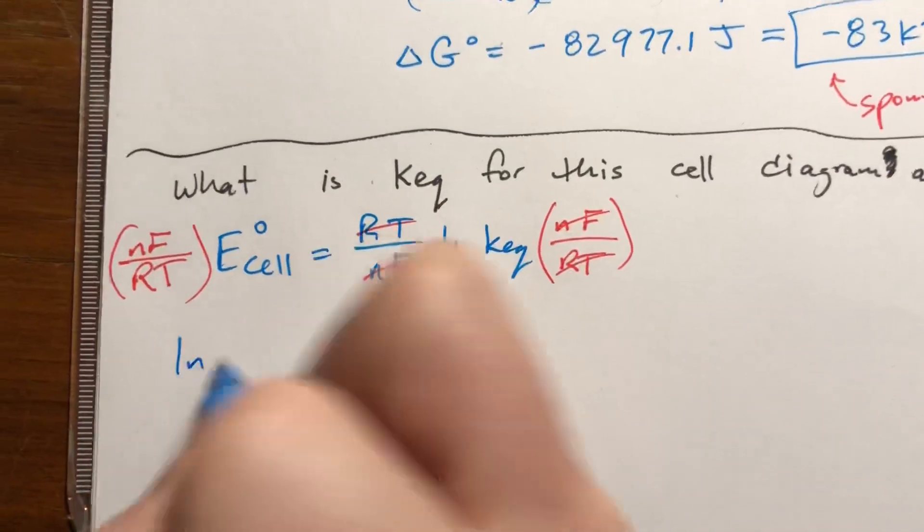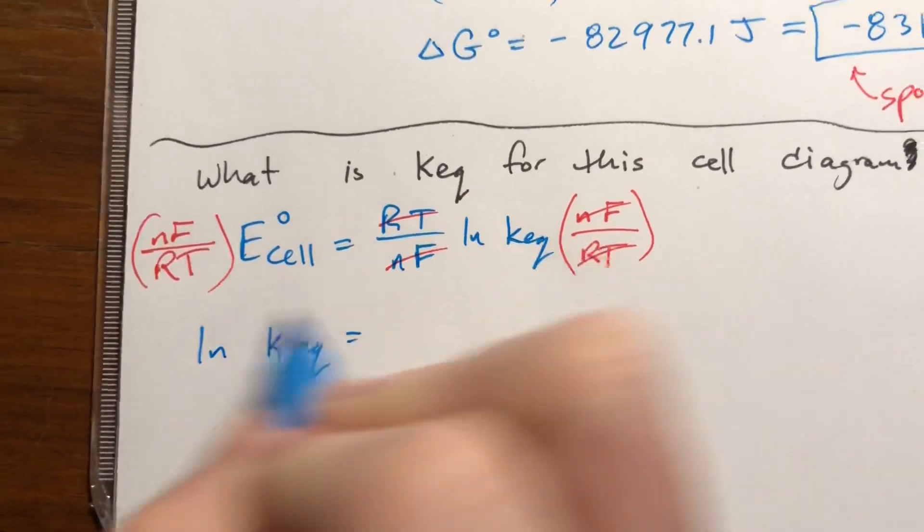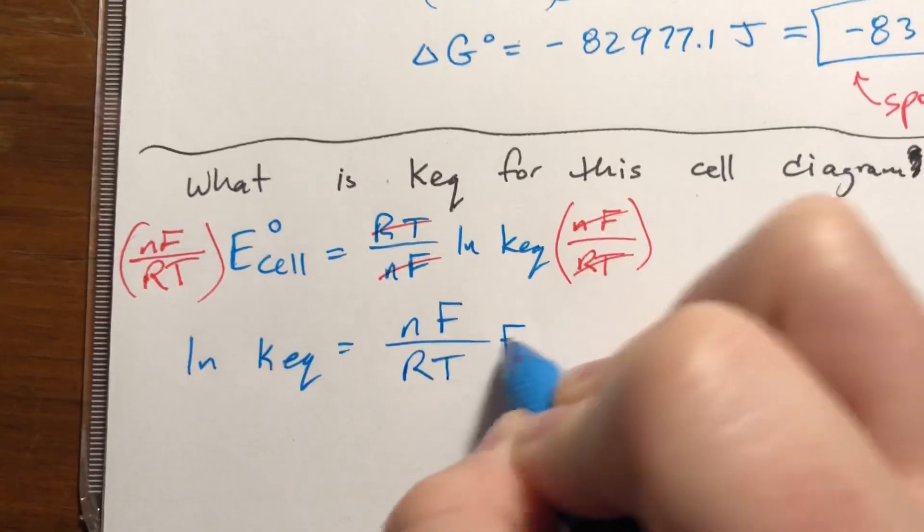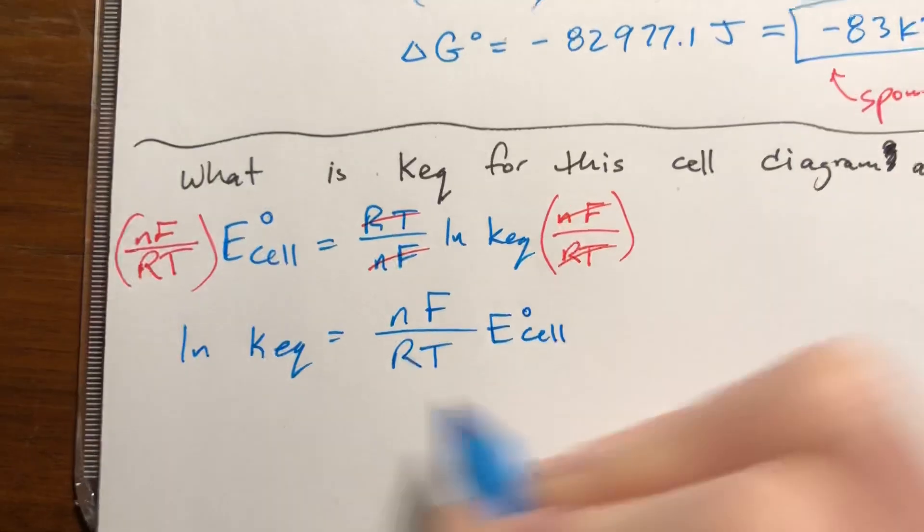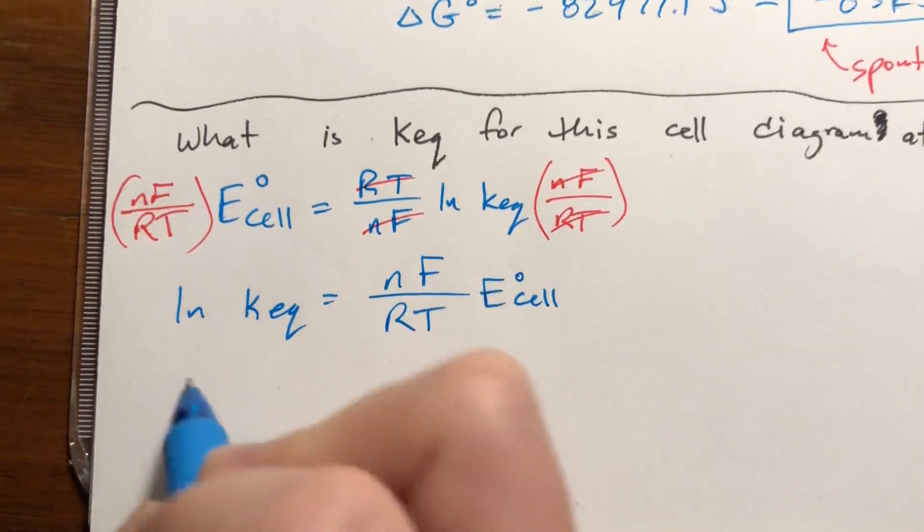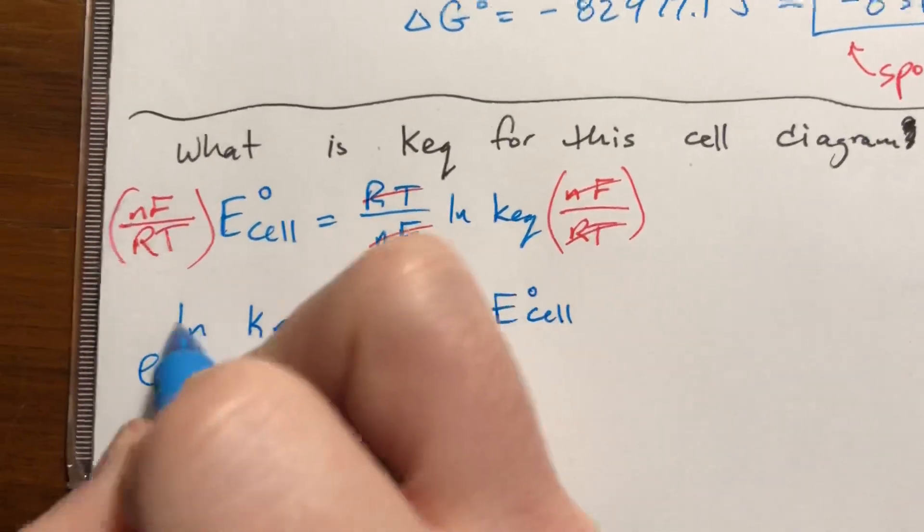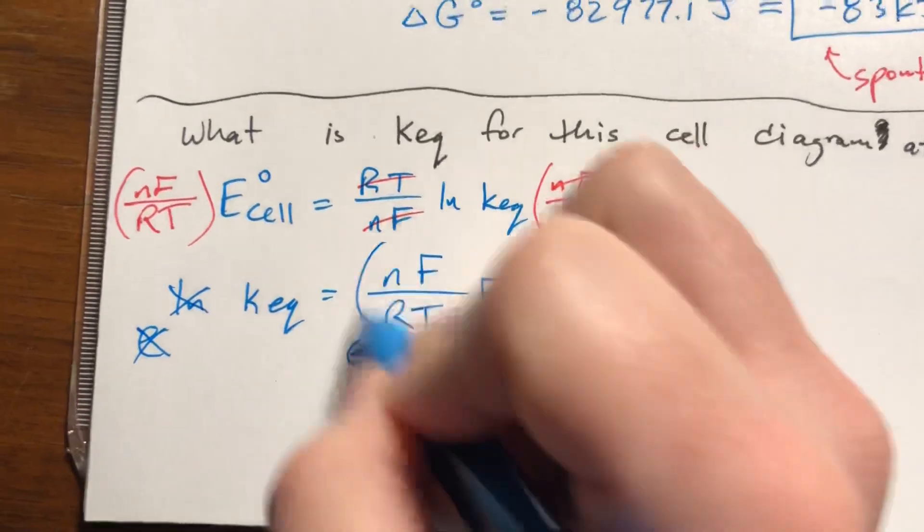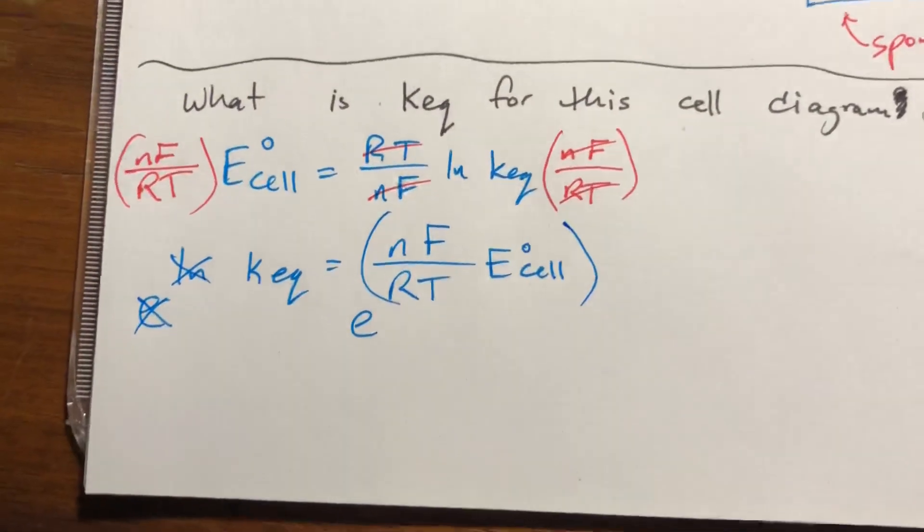Natural log of Keq equals all of this stuff. So N F over R T times E sub cell. To get rid of this natural log, because we're solving for Keq, we have to take E to both sides. So Keq is equal to E to all of this stuff. All of that is an exponent.